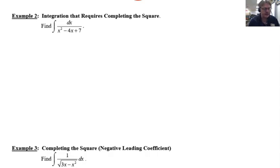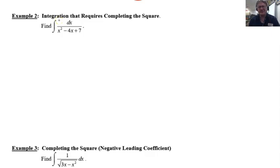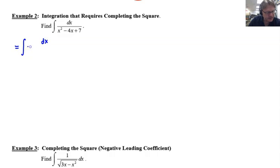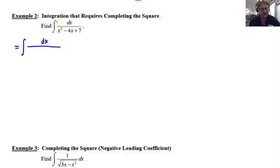We're going to integrate 1/(x² - 4x + 7) dx. Note that no integration technique discussed so far will help here - everything is crammed in the denominator with only a one in the numerator, so u-substitution won't do anything useful. We must make sure there is a coefficient of one in front of x² - completing the square does not work otherwise. If there isn't, you factor it out first.